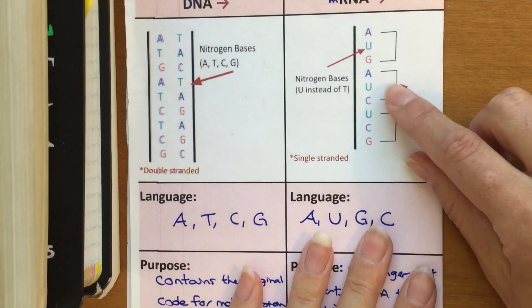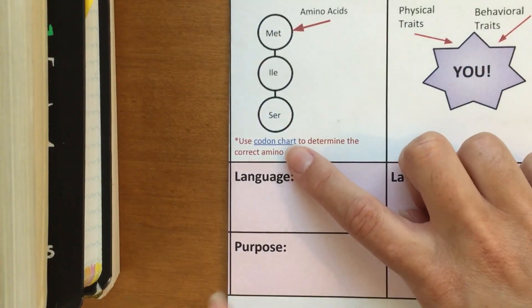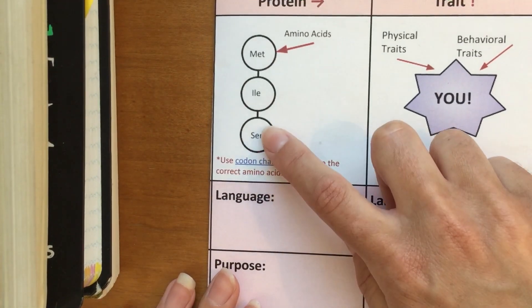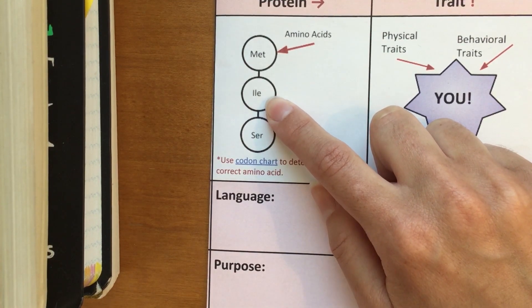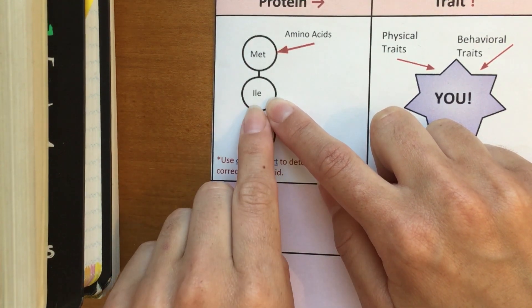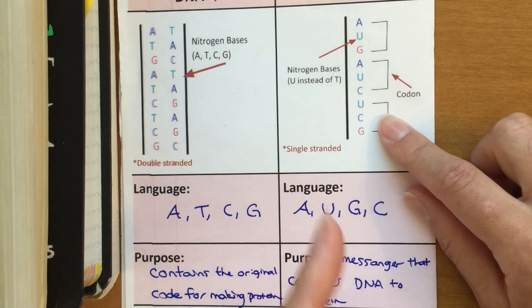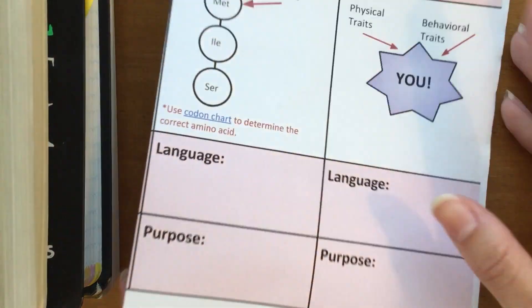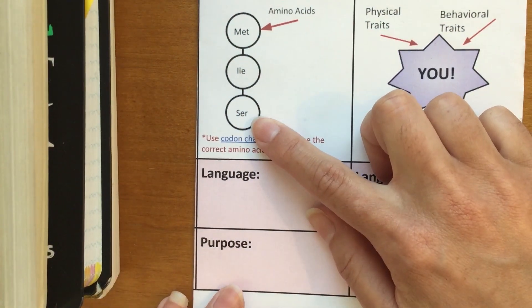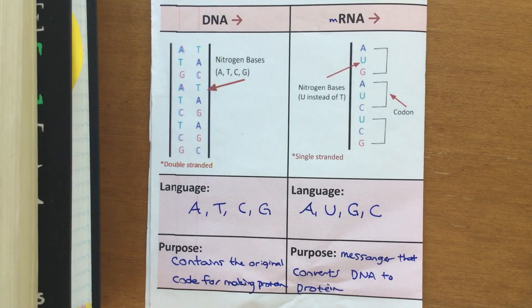If I flip back over, I can see the next set of three letters was AUC. And again, using this codon chart, which I'll go over in a different video, AUC stands for or codes for an amino acid called isoleucine, abbreviated ILE. And then lastly, the last set of three in this example, UCG—if we use the codon chart, we will find that UCG stands for an amino acid called serine.